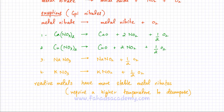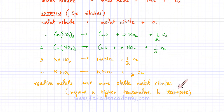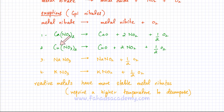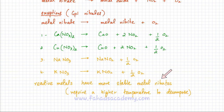One last point about metal nitrates: just as with carbonates, reactive metals have more stable metal nitrates, meaning they require a higher temperature to decompose. For example, potassium nitrate — a reactive group 1 metal — is much harder to decompose, while copper nitrate (an unreactive metal) decomposes much more easily.